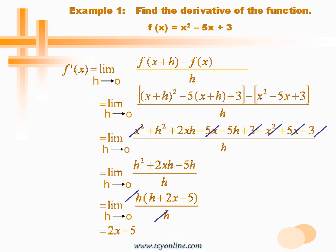Now let's see by an example how to find the derivative of a function f(x) equals x squared minus 5x plus 3. Simply use the formula: f'(x) equals the limit as h approaches 0 of f(x+h) minus f(x) over h. Simply plug in the values of x as x plus h and x in the given function, and take their difference.